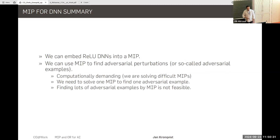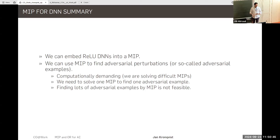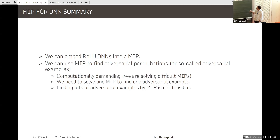Summary: we can embed deep neural networks with ReLU nodes into MIP problems — for finding adversarial examples, or if the neural network approximates some objective function. However, these are computationally demanding. Finding one adversarial example requires solving one MIP, so generating thousands of adversarial examples via MIP is not feasible. You can generate some, but for large numbers you need something faster.